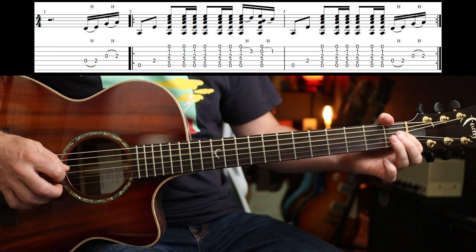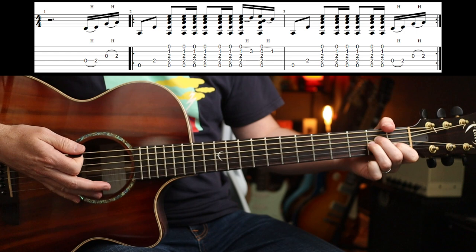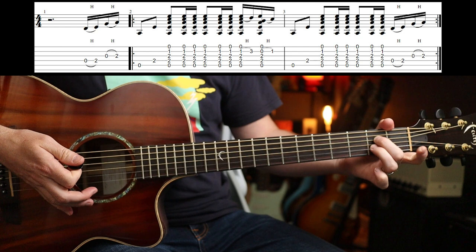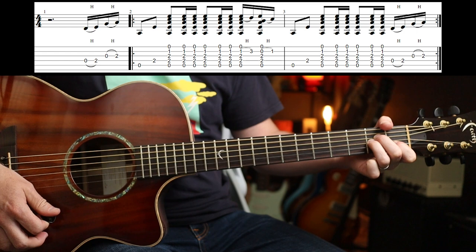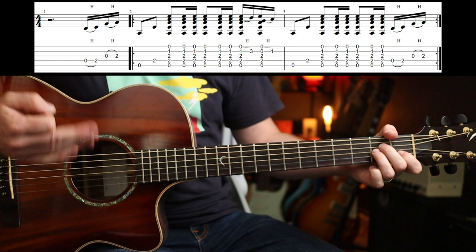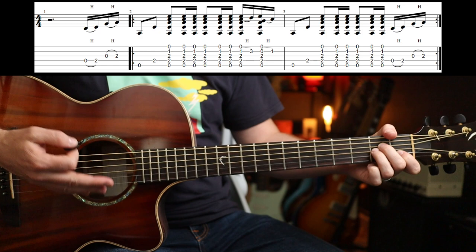Then you're going to play, arpeggiate the first two notes of that chord, right, the root A and the second fret on the D, which is an E note. Then you play a big chord. Then you've got this rhythm, okay? That is just down, down up, down, down up. Twice, okay?